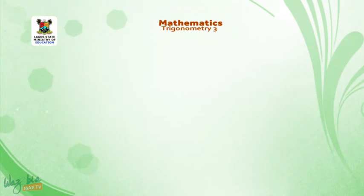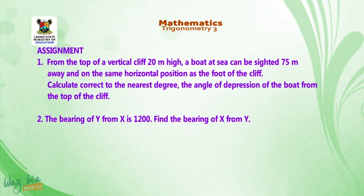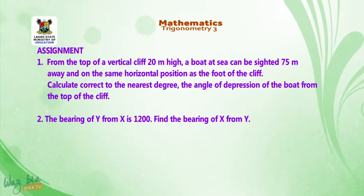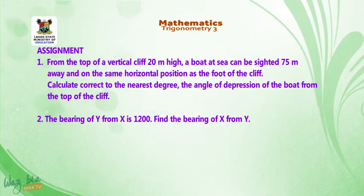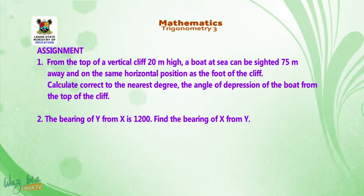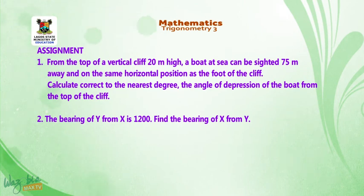I have some assignments for us. Question 1: from the top of a vertical cliff 20 meters high, a boat at sea can be sighted 75 meters away and on the same horizontal position as the foot of the cliff. Calculate, correct to the nearest degree, the angle of depression of the boat from the top of the cliff. Question 2: the bearing of Y from X is 120 degrees. Find the bearing of X from Y.